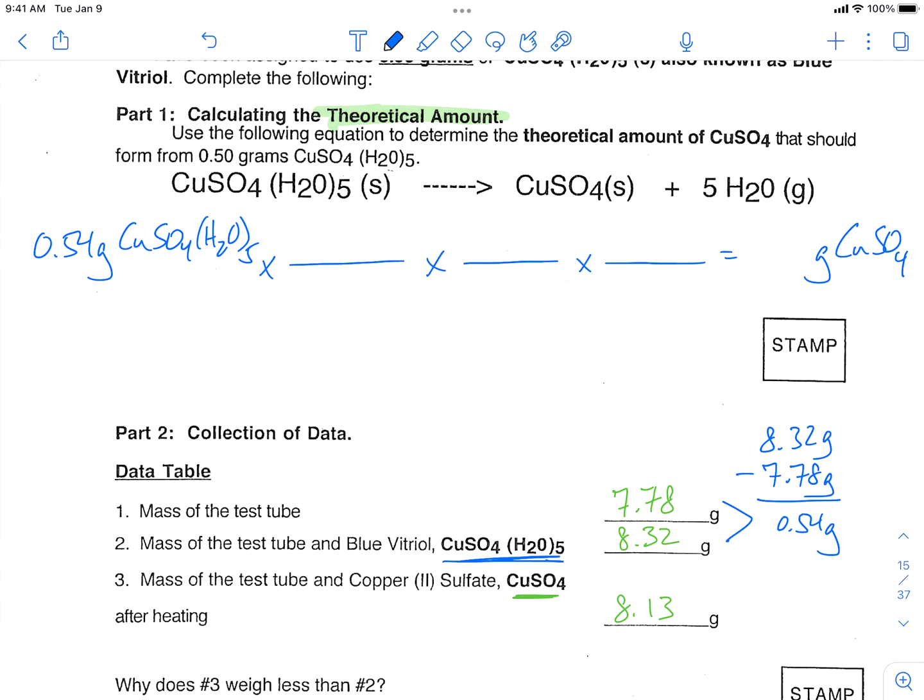So our first step is to convert from grams of the pentahydrate to moles of our copper sulfate pentahydrate. And the bottom is going to be our molar mass. And we calculated this earlier at 249.6 grams for every one mole.